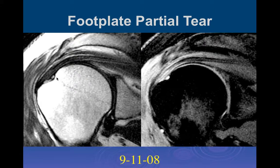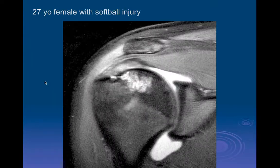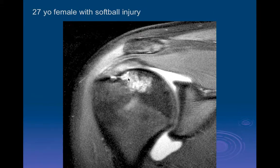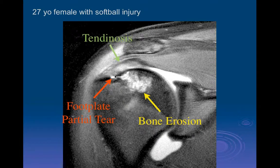Here's that same patient a bit later, and we can actually see a much better-developed partial tear with rather sharp margins now, compatible with a more chronic, stable partial tear of the footplate insertion. We try to estimate the percentage involvement—this roughly involves about 50% of the thickness of the insertion. This is a 27-year-old female with a softball injury showing a lot of tendinosis in the supraspinatus and infraspinatus tendon, a partial tear of the footplate insertion, and a large erosion associated with trabecular bone injuries and partial tears of the tendon insertion.